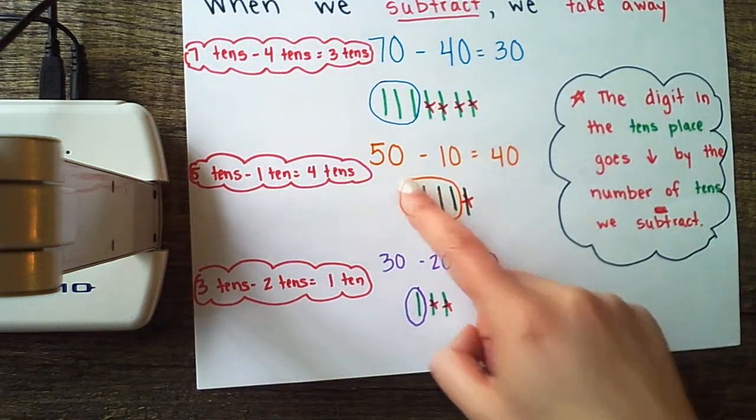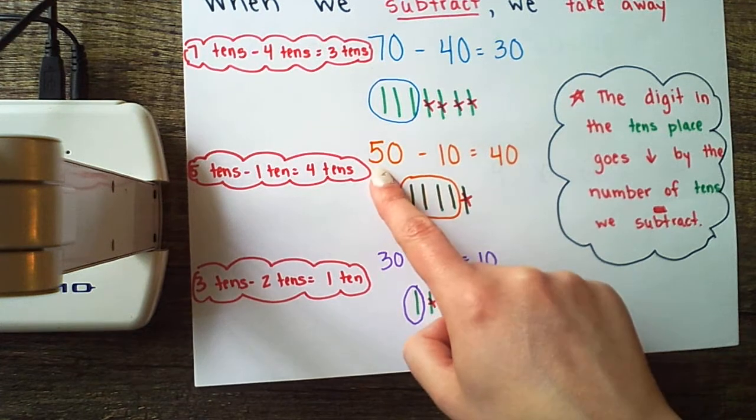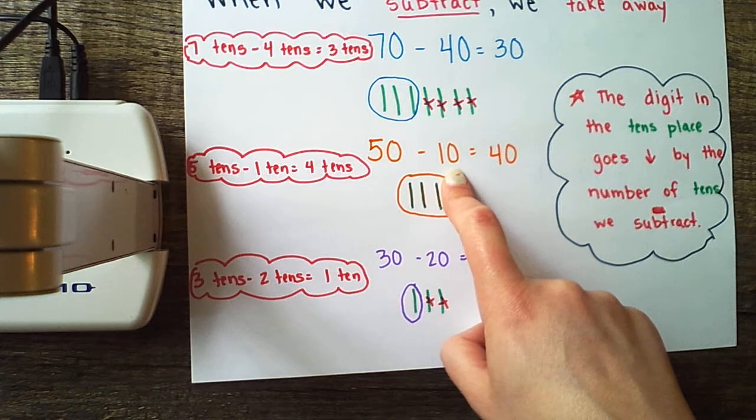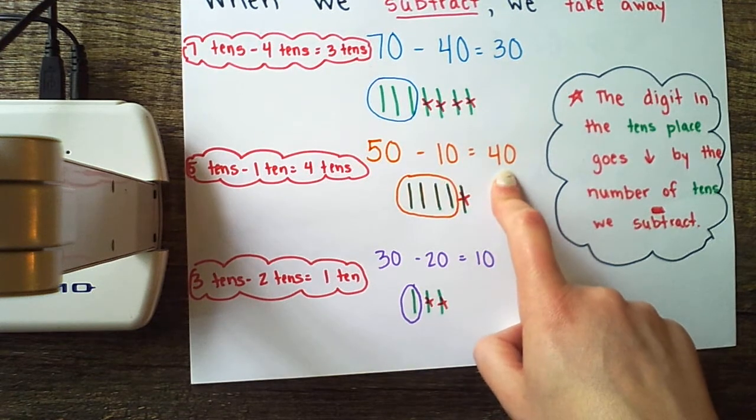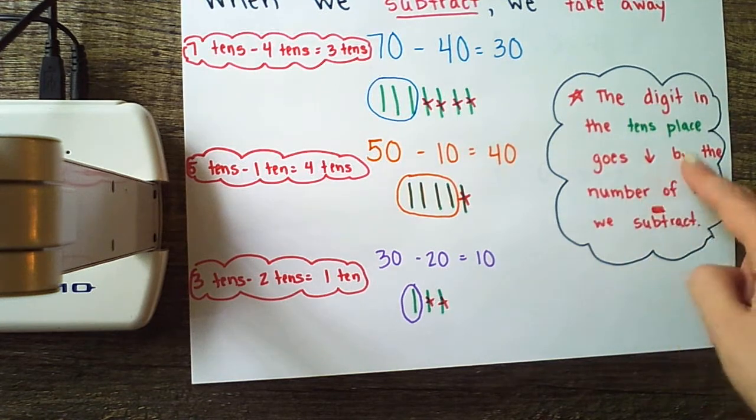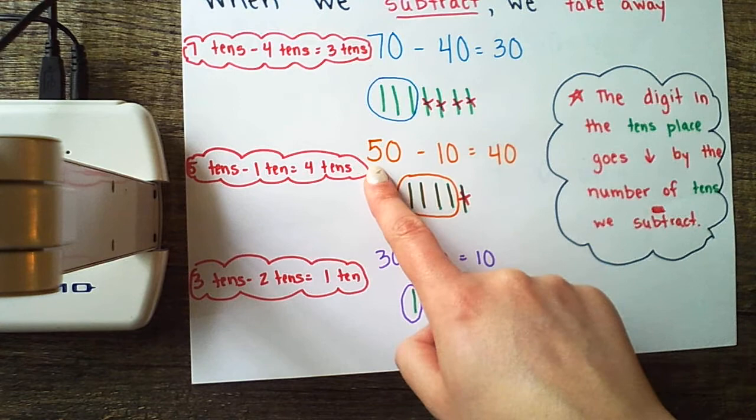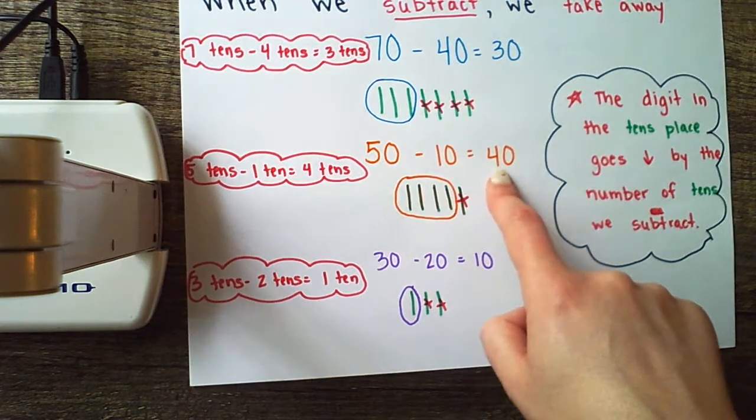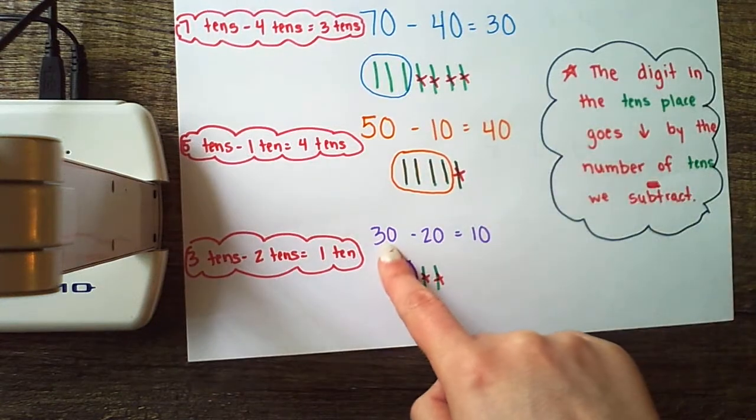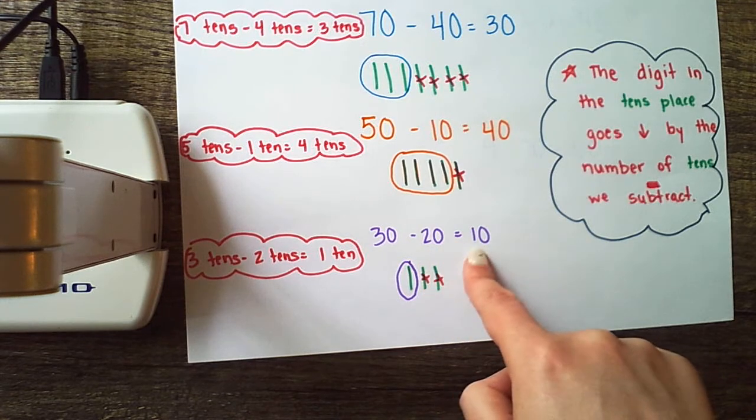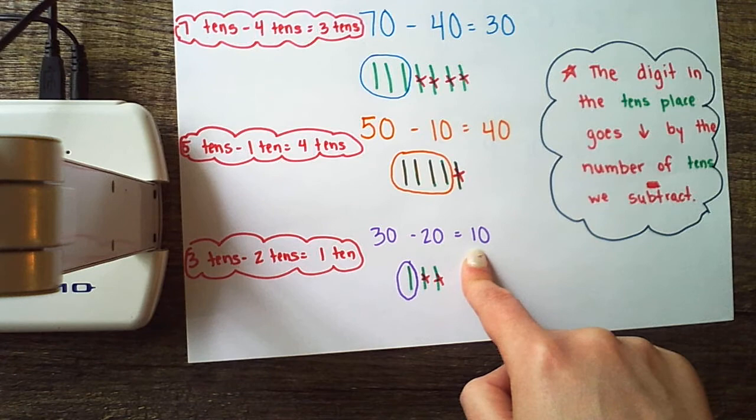I could do the same thing with 50 minus 10. Five tens is the same as 50. Minus one 10, which is 10, equals 40 or four tens. The digit in the tens place goes down by the number of tens we subtract. If I start with five tens and take one ten away, five minus one is four, so I'm left with four tens. If I start with three tens or 30 and I take two tens or 20 away, I'm left with one ten. Three minus two is one. Three tens minus two tens is one ten.